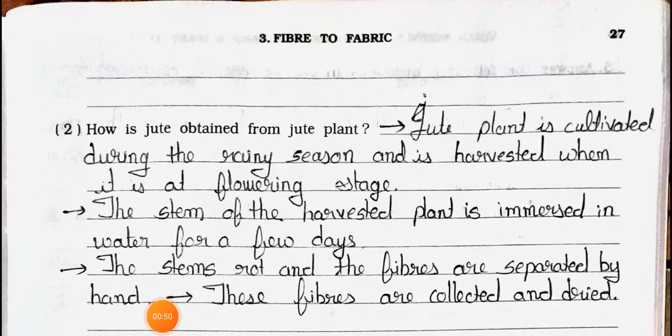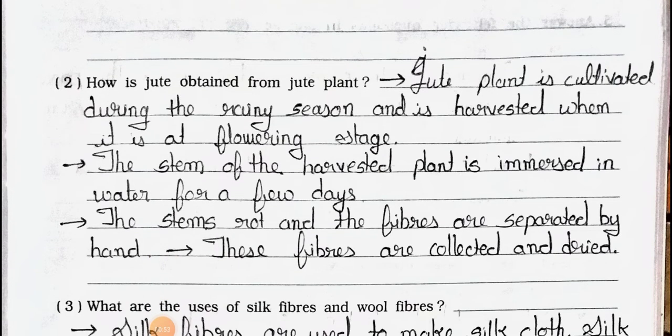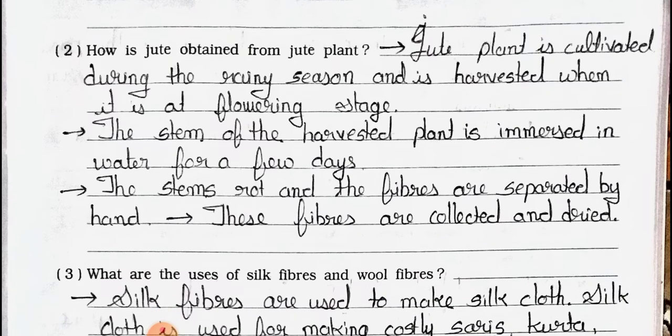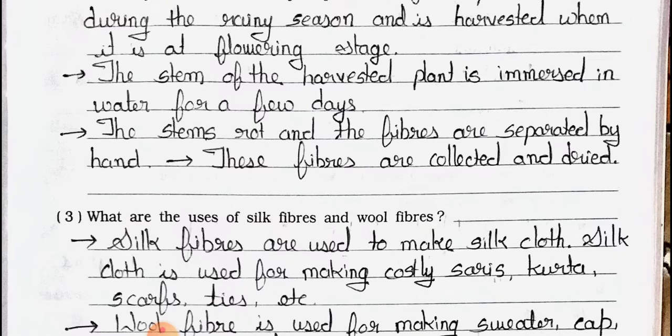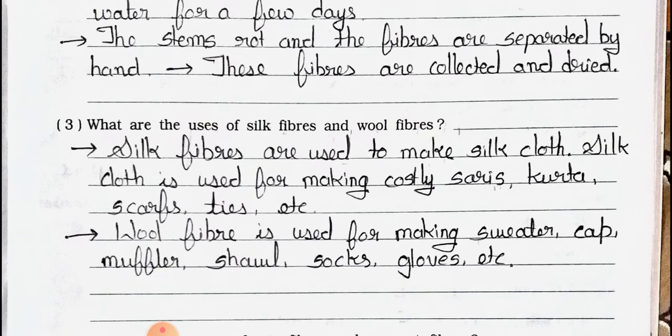Question number two: How is jute obtained from the jute plant? Answer: Jute plant is cultivated during the rainy season and is harvested when it is at the flowering stage. The stem of the harvested plant is immersed in water for a few days. The stems rot and the fibers are separated by hand. These fibers are collected and dried.